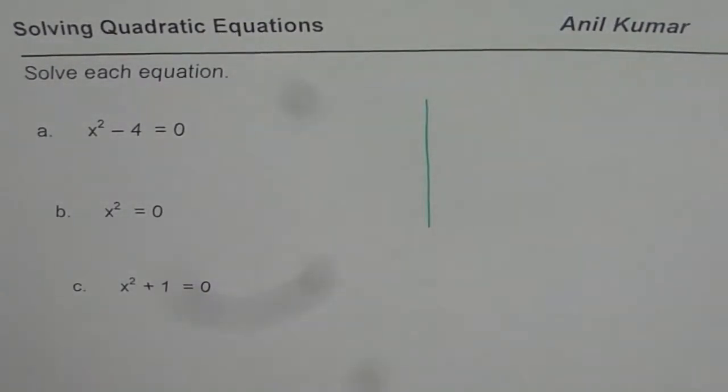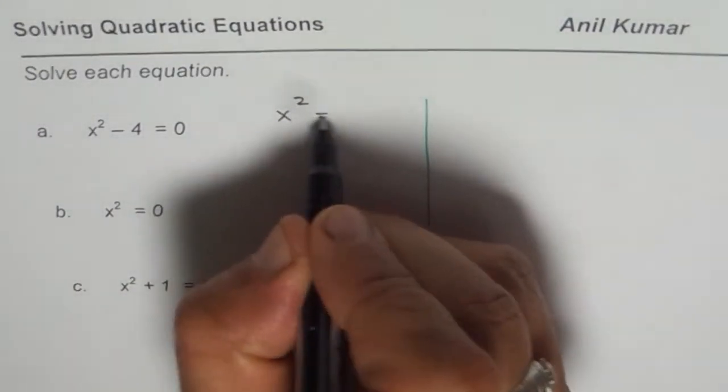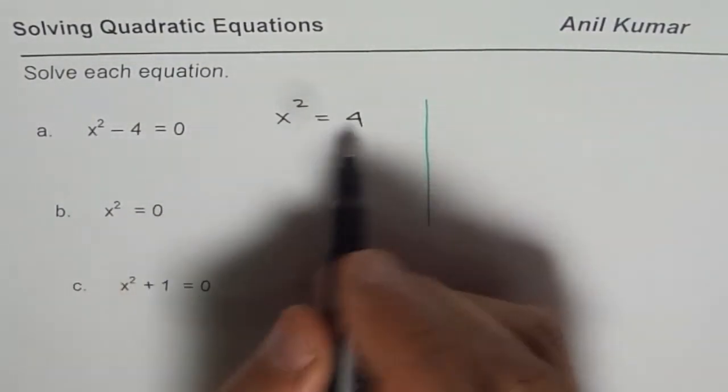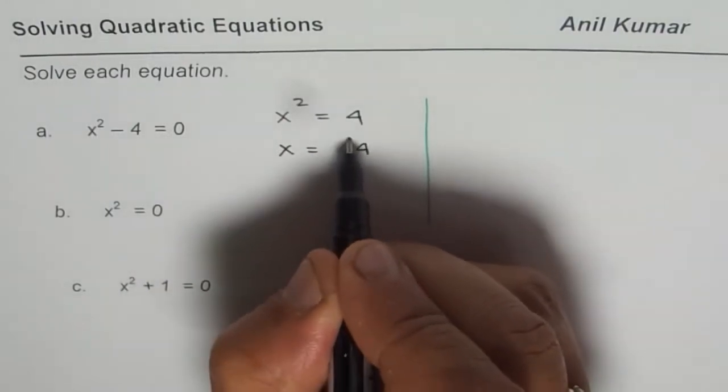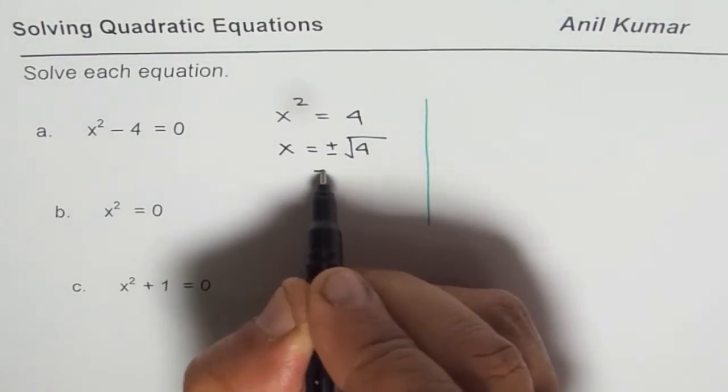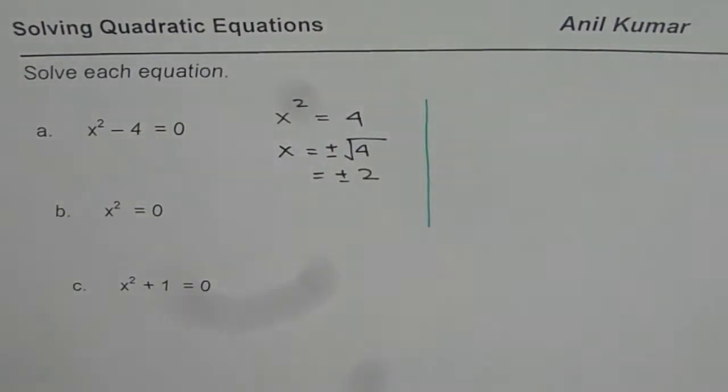One of the ways is we can bring 4 to the right side, so we have x square equals to 4, and then we square root. So we get x equals to square root of 4. Whenever you square root, you have to write plus and minus, and that gives you two answers, plus and minus 2. So that is one way to do it.